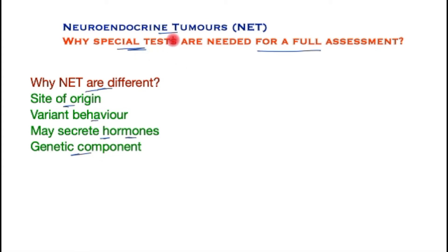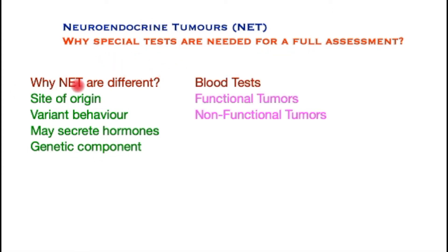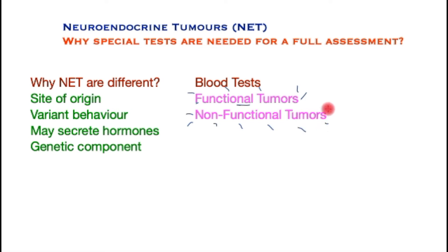Neuroendocrine tumors are either functional — that is, hormone-producing — or non-functional tumors that do not produce hormones but do produce other chemicals that are present in the blood. It is thus very important to measure the level of hormones in the blood.